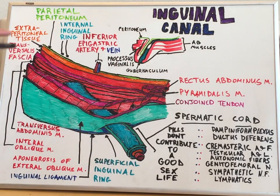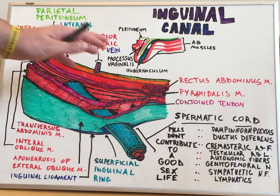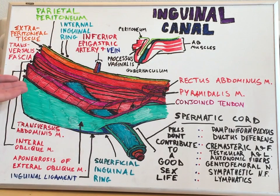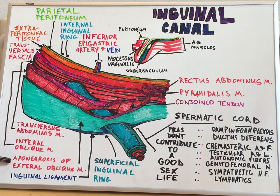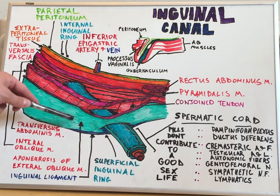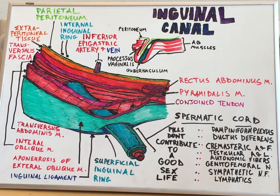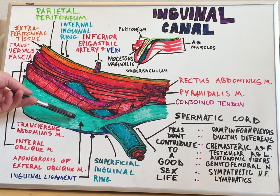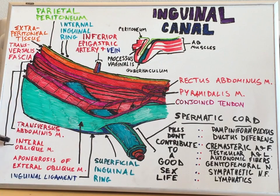Looking at this diagram, we see many different layers. To understand these layers we need to understand that there are boundaries to the inguinal canal — it has an anterior, posterior, superior, and inferior boundary; a roof and a floor. The anterior boundary is made up of the aponeurosis of the external oblique muscle, seen here in green, as well as the internal oblique muscles more laterally.